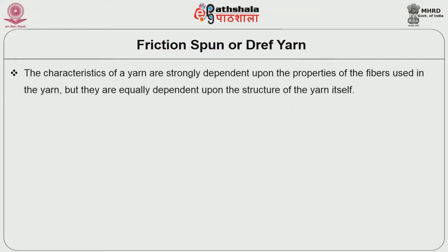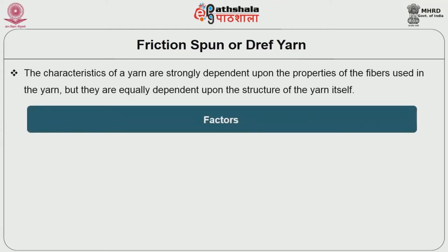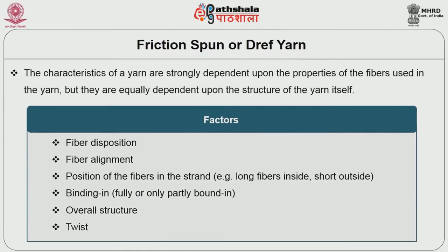The characteristics of a yarn are strongly dependent upon the properties of the fibers used, but they are equally dependent upon the structure of the yarn itself. The following factors are especially significant: the number of fibers in the yarn cross-section, fiber disposition, fiber alignment, position of fibers in the strand, binding of fibers, the overall structure, and finally the twist.